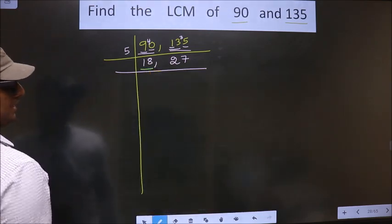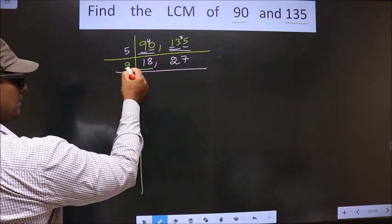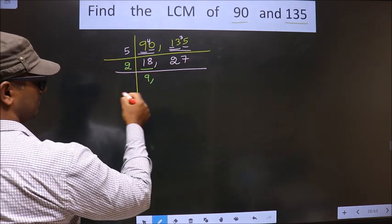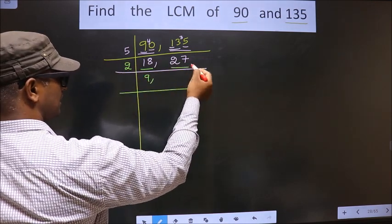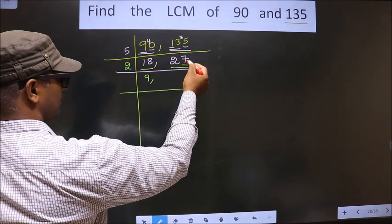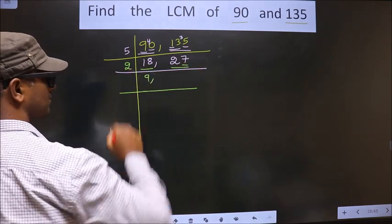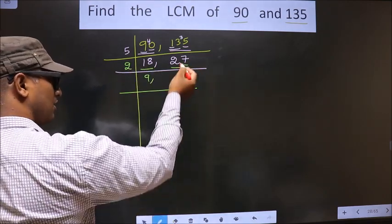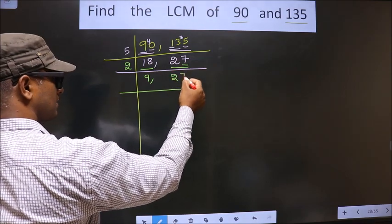Now here we have 18. 18 is nothing but 2 nines. The other number is 27. Last digit is 7, not even, so this number is not divisible by 2. So you write down this number as it is.